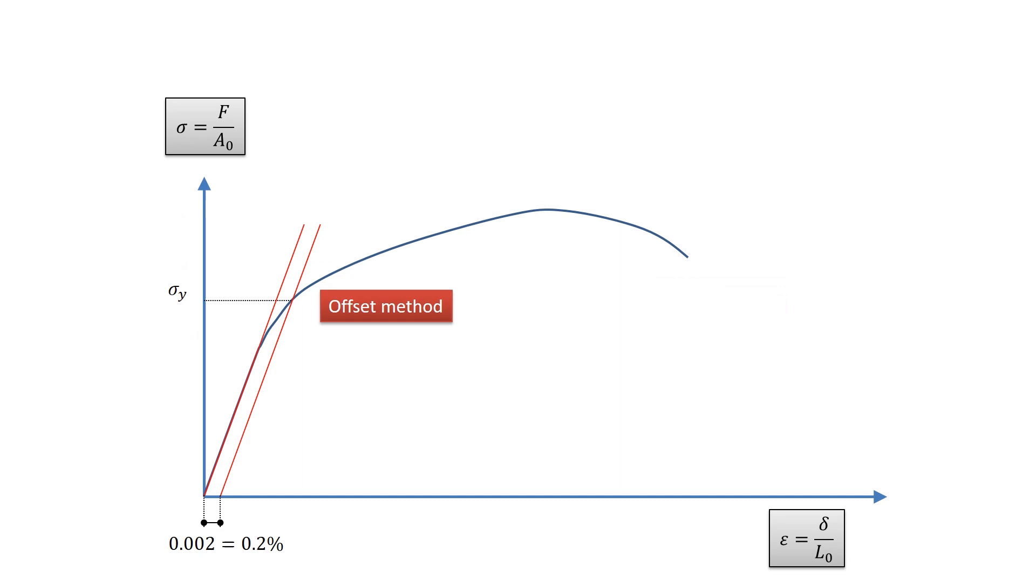The offset method can be used to define a yield stress for aluminum. In this case, the linear portion is offset by a value of 0.2%. The intersection of this offset with the curve defines the yield stress or yield strength of the aluminum specimen.